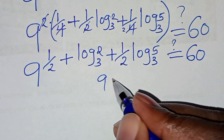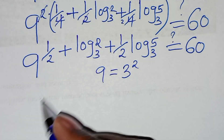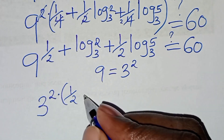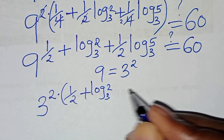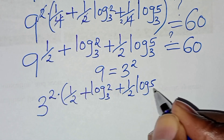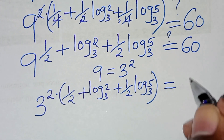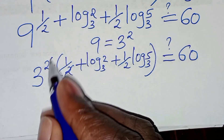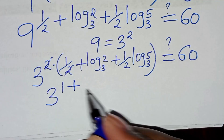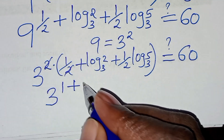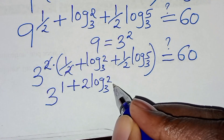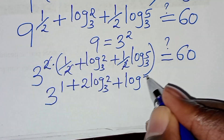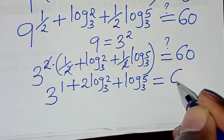Now, we can express 9 as 3 to the power 2. So this implies that this is 3 to the power 2, times the bracket one half plus log base 3 of 2 plus one half log base 3 of 5. This should give us a value of 60. We can simplify again here by 2: this gives 3 to the power 1, then plus 2 times log base 3 of 2, which is log base 3 of 2 squared, then plus log base 3 of 5. This is supposed to give us a value of 60.